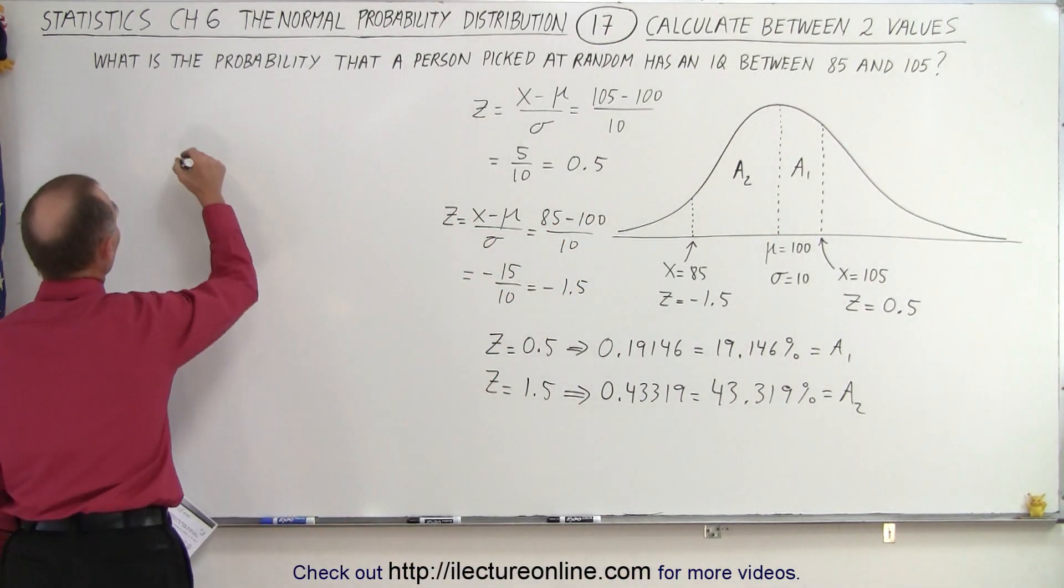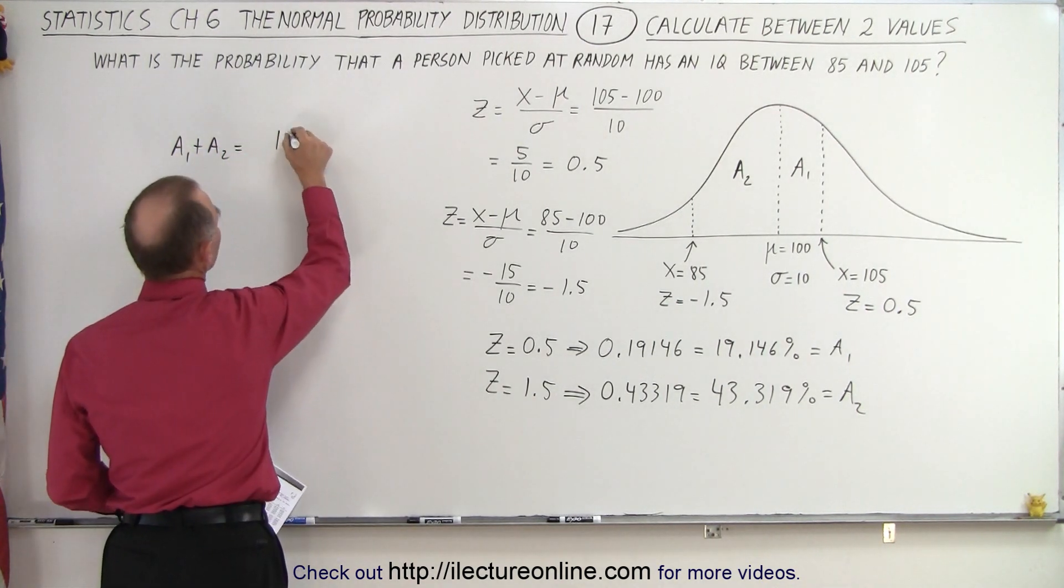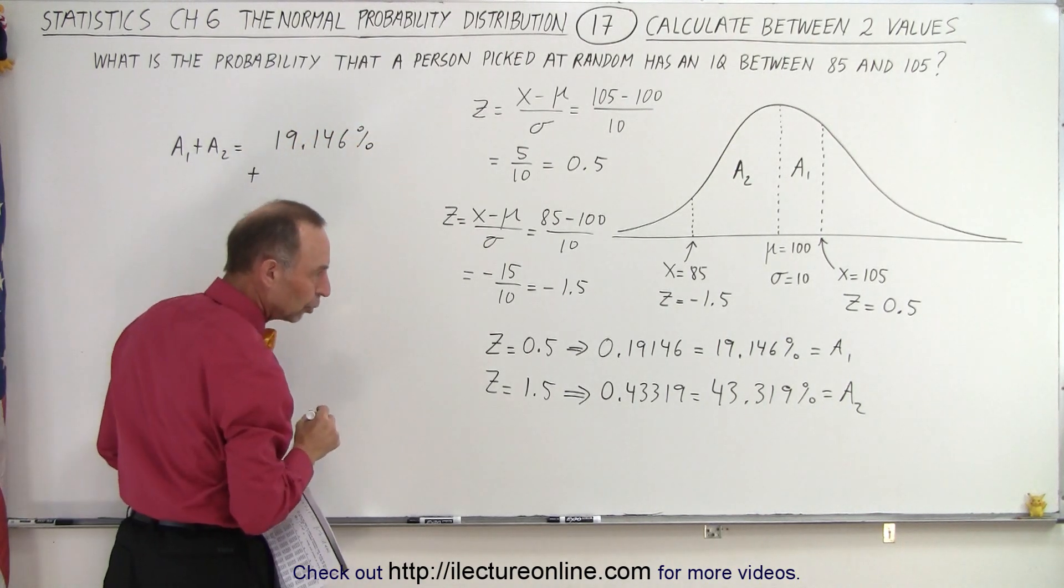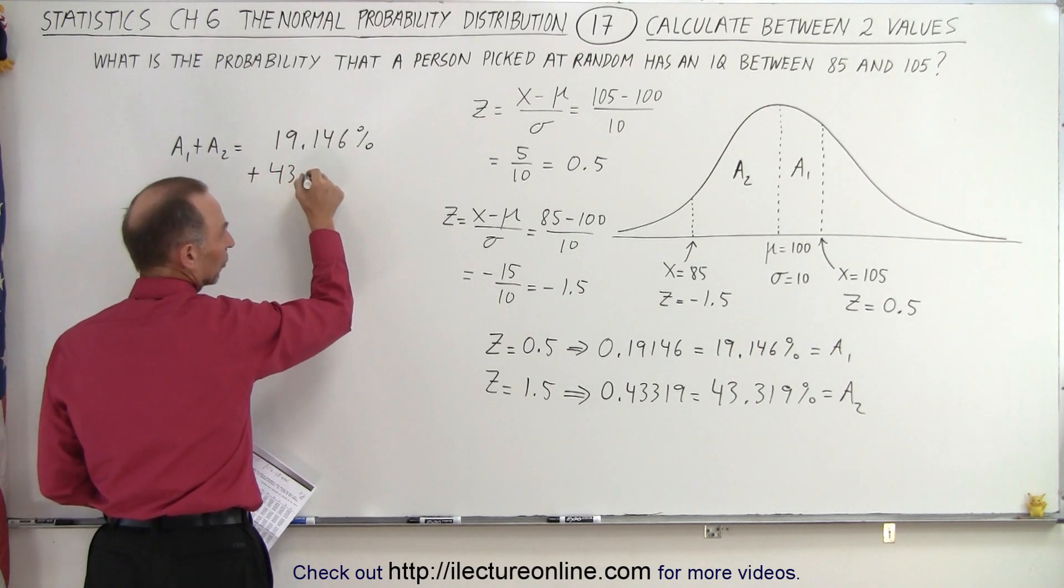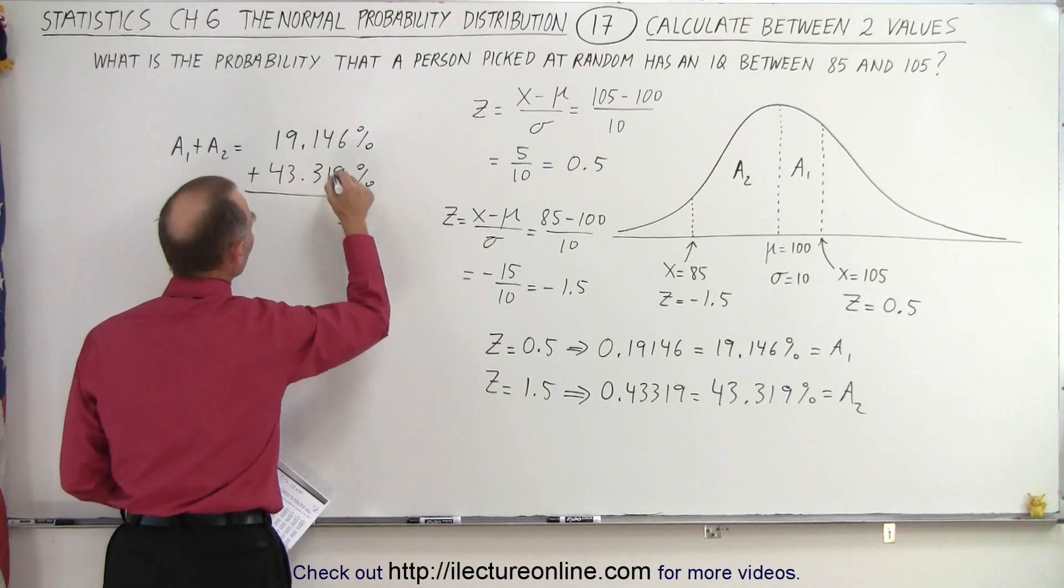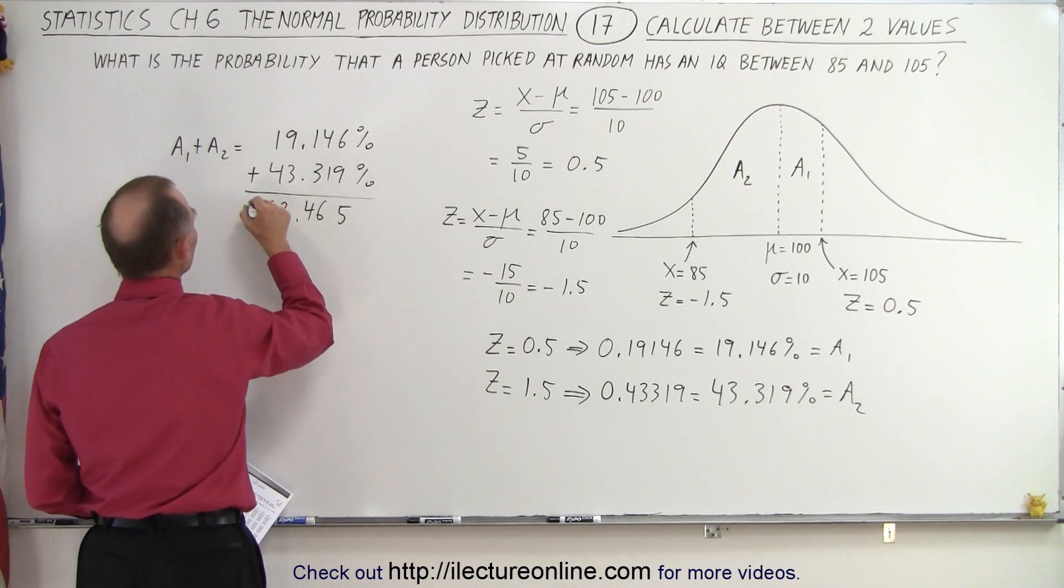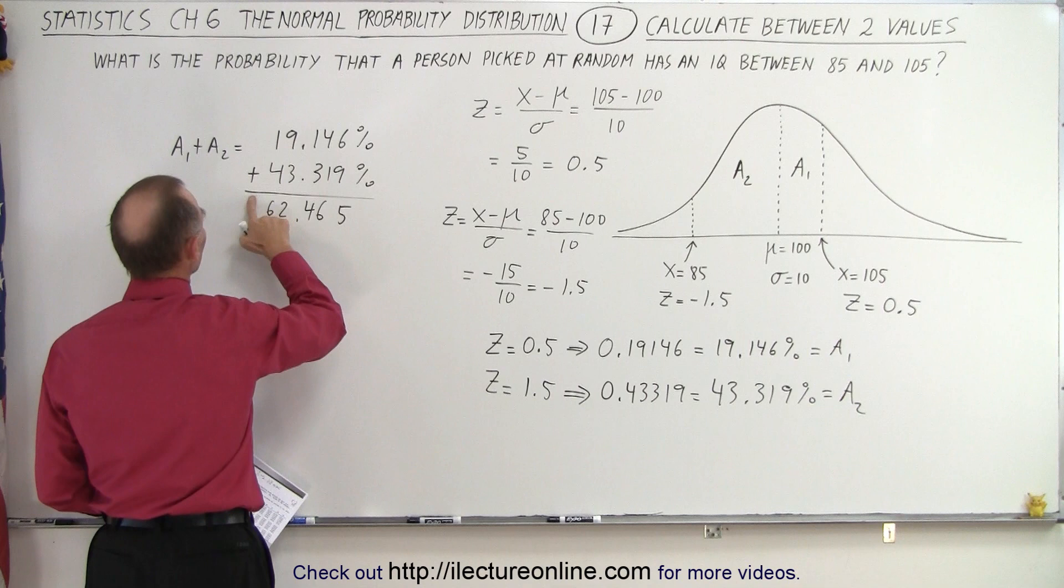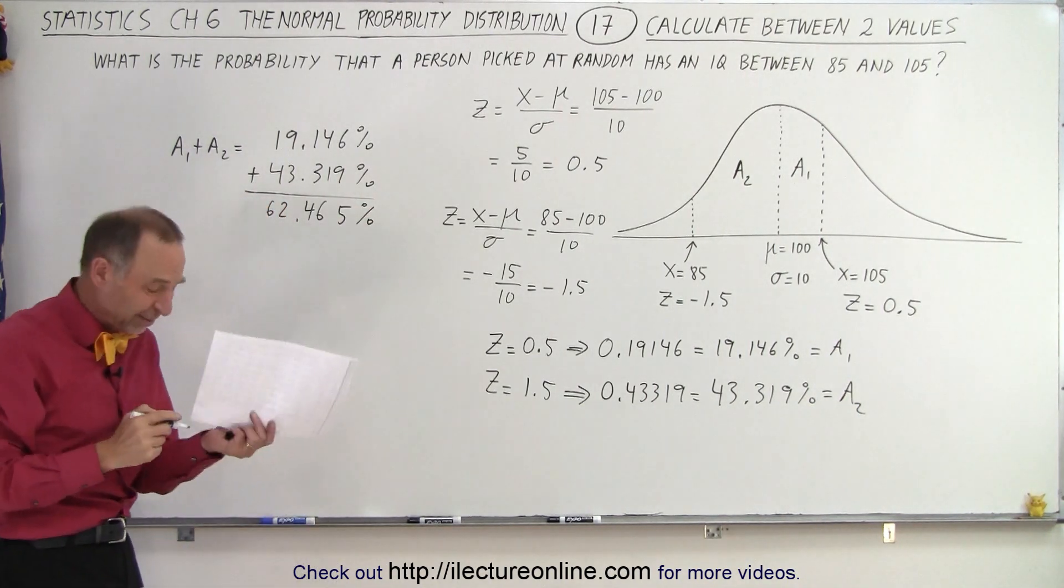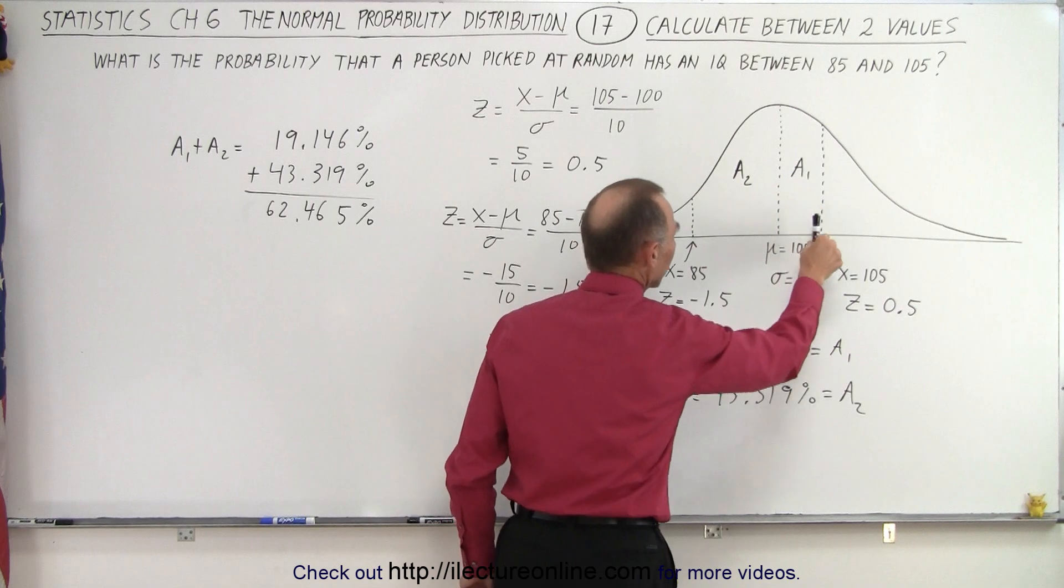So now what you do is you add them together. A1 plus A2 is equal to 19.146%, and we add to that area 2, which is 43.319%. When we add them up, we get 62.465%. So a little bit more than 62% of all the people fall between an IQ of 85 and 105.